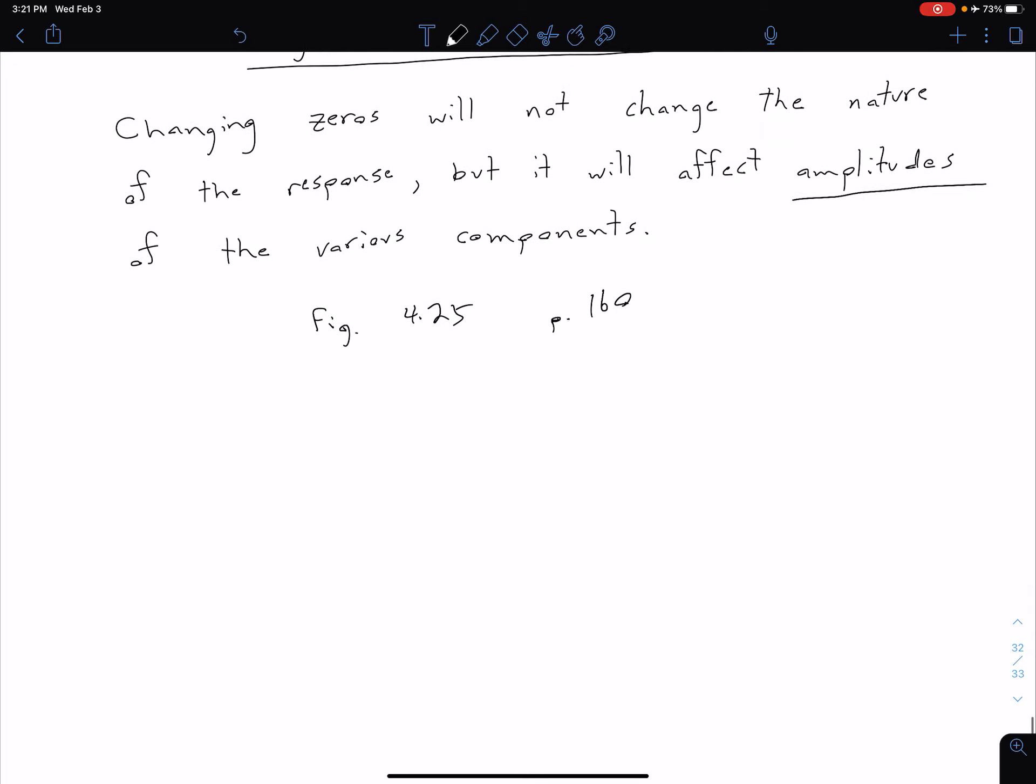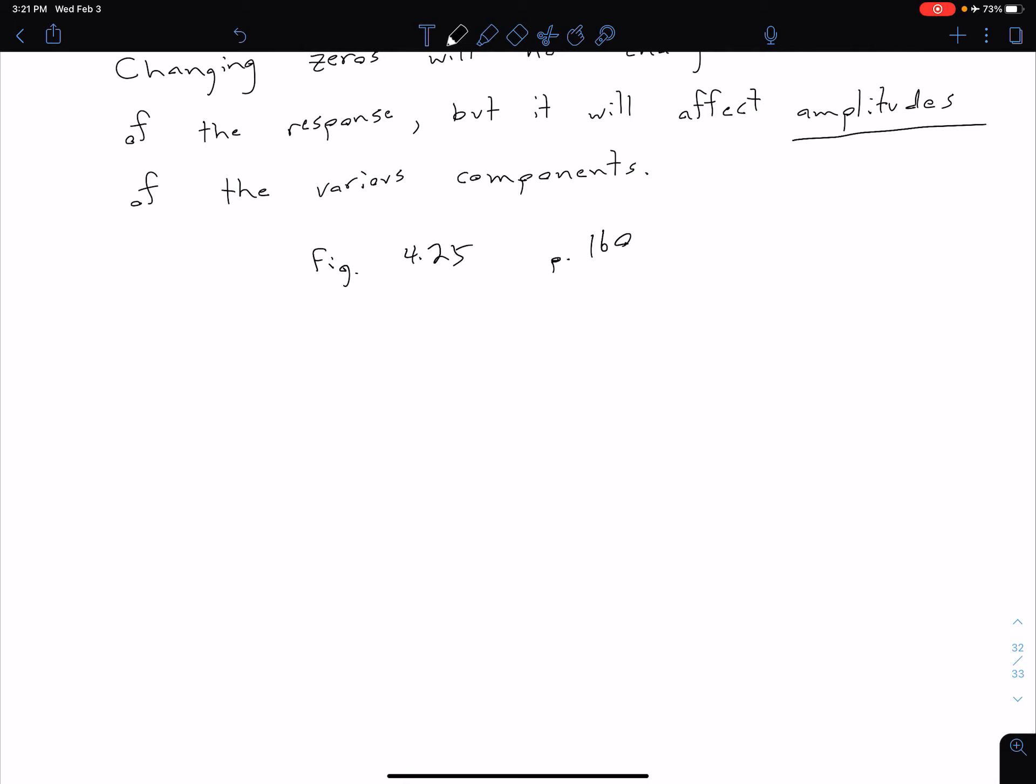So we're going to come at this problem a couple different ways. First, let's consider a system with two poles and a zero that's on the real axis in the left half S-plane. So let's consider a system that has two poles and a zero on the real axis. And we're also assuming that this zero is in the left half of the S-plane.